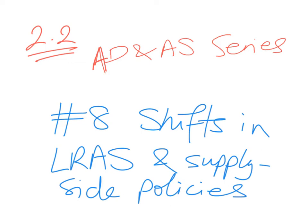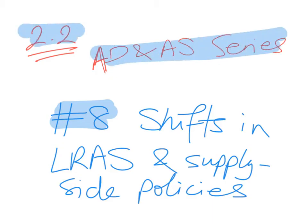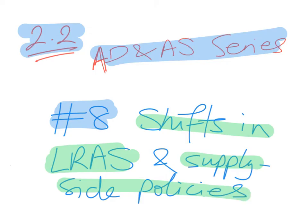This is video number 8 of the Aggregate Demand and Aggregate Supply Series, which is part of Unit 2.2 in the IB Macroeconomics course. In this video, I'm going to explain and discuss the shifts in the Long Run Aggregate Supply Curve, LRAS, as well as an introduction to supply-side policies.